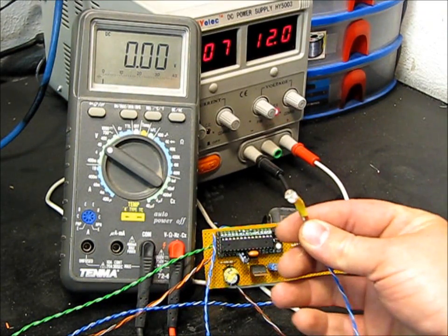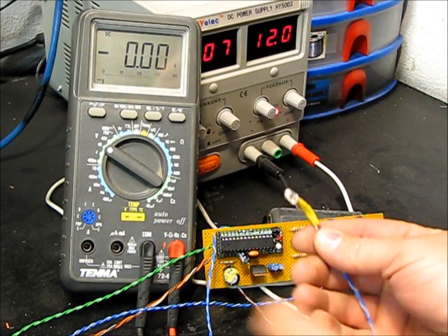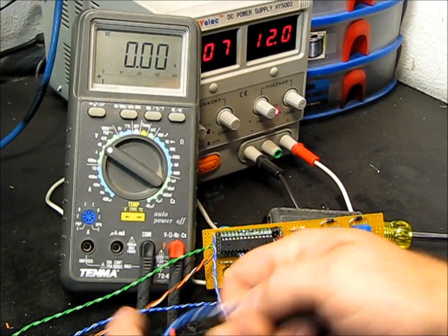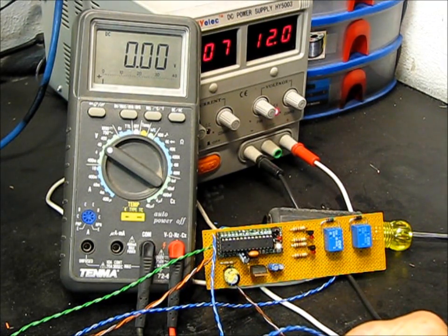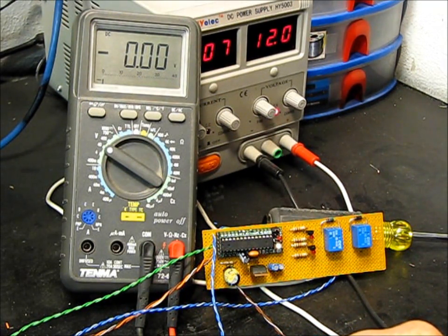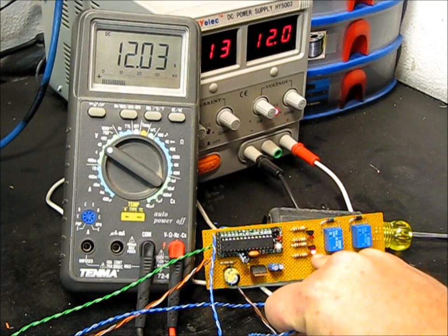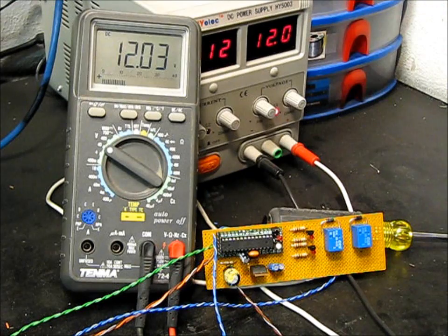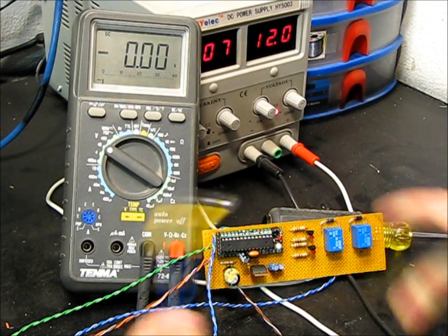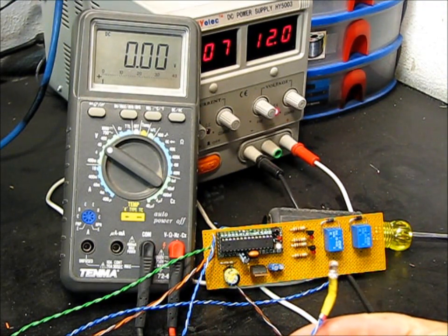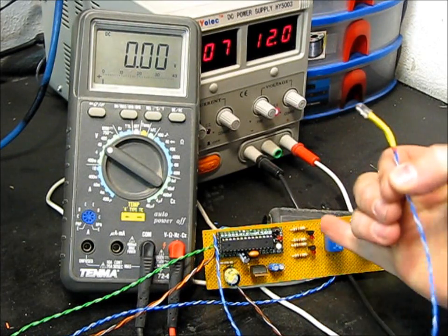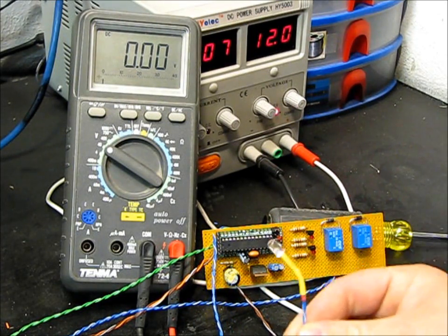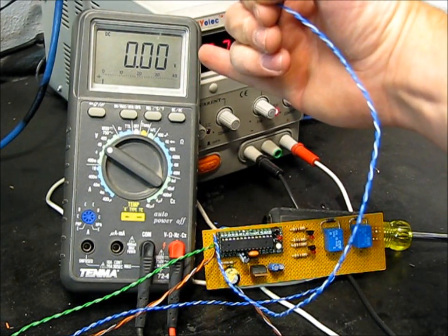So here's my light sensor. I have it in test mode. I'll go ahead and make it nighttime. You'll notice this LED comes on. I've got positive 12 volts here. And then, when it's daytime, the other LED will light, and we'll have negative 12 volts here.